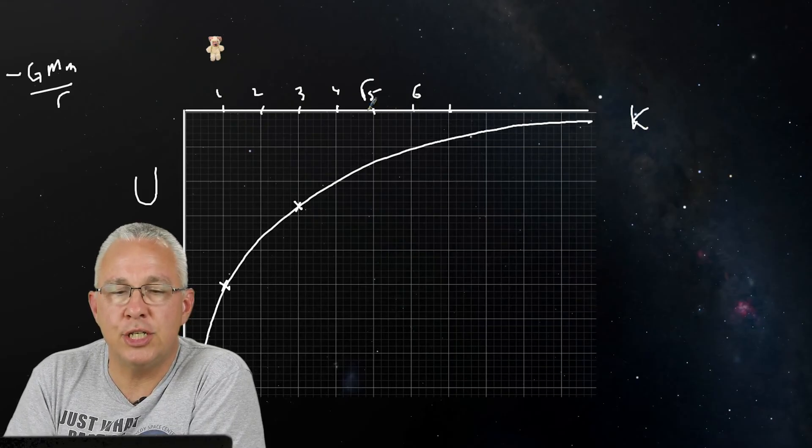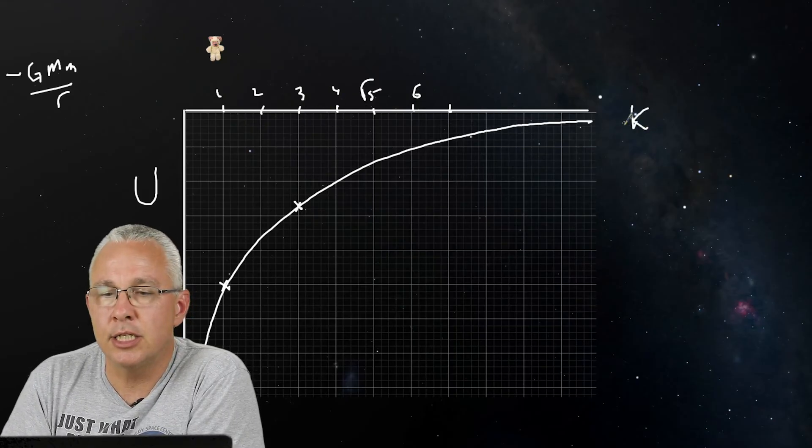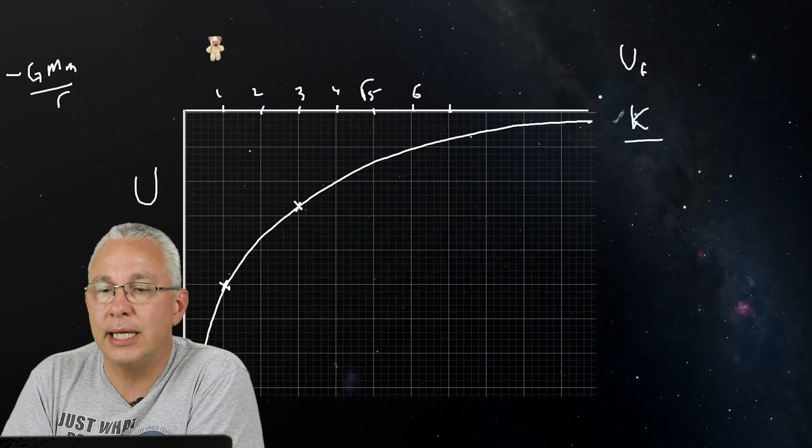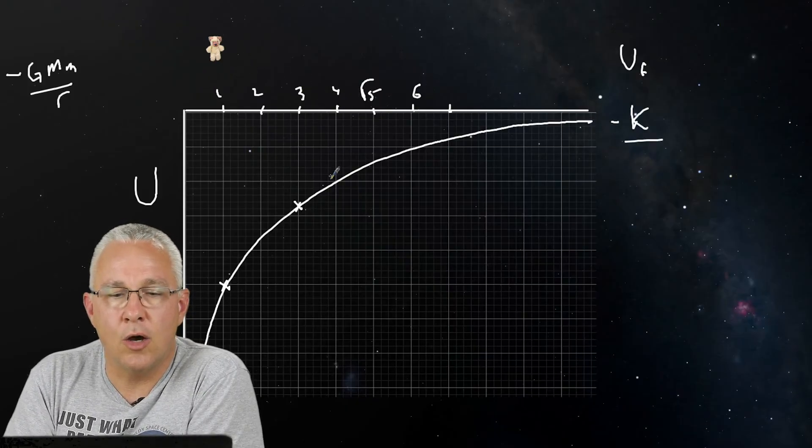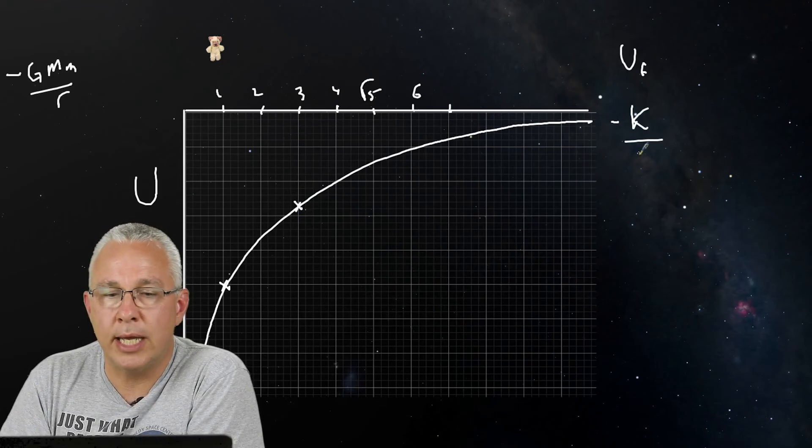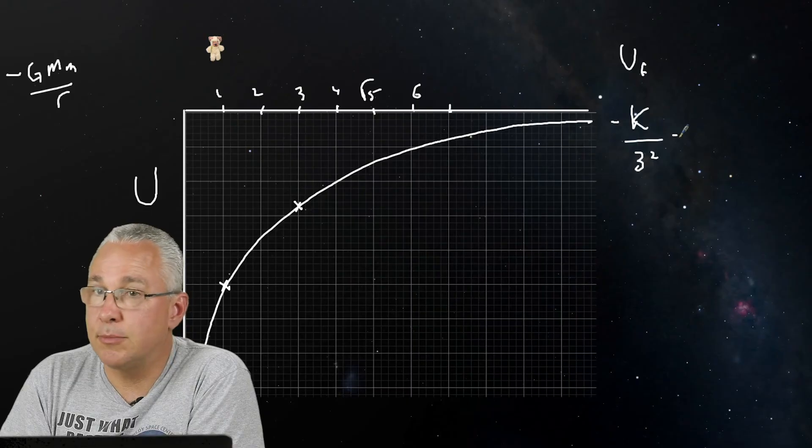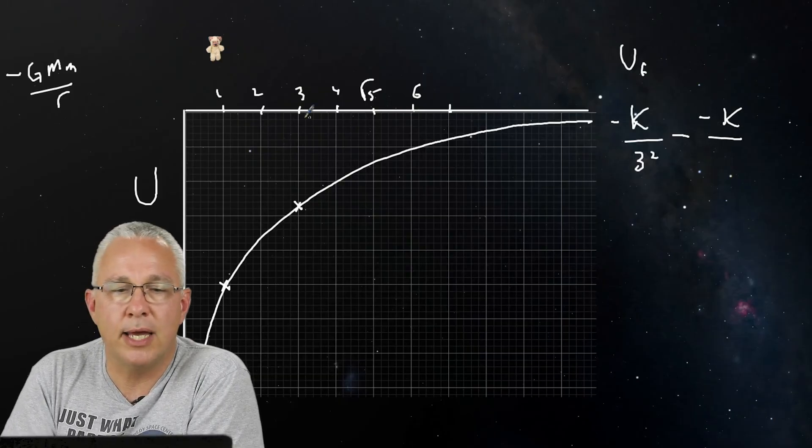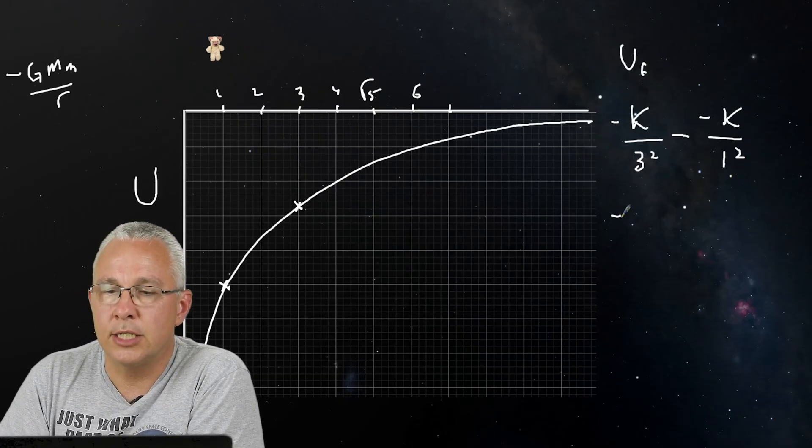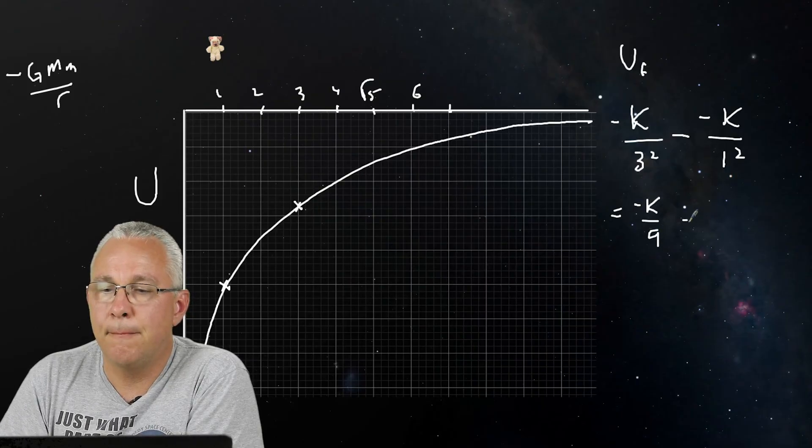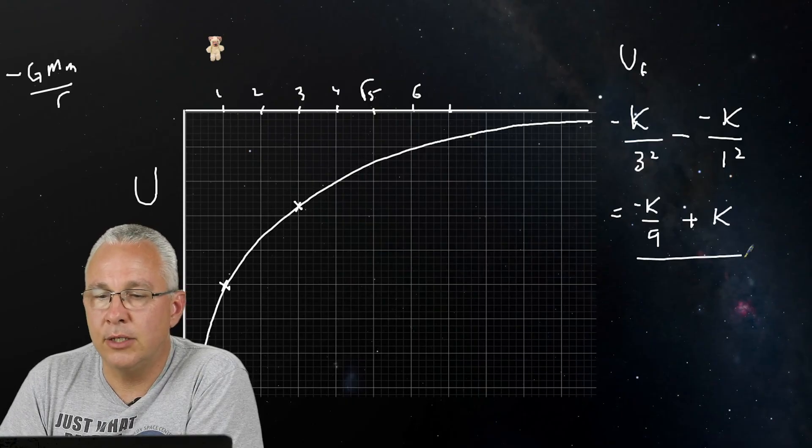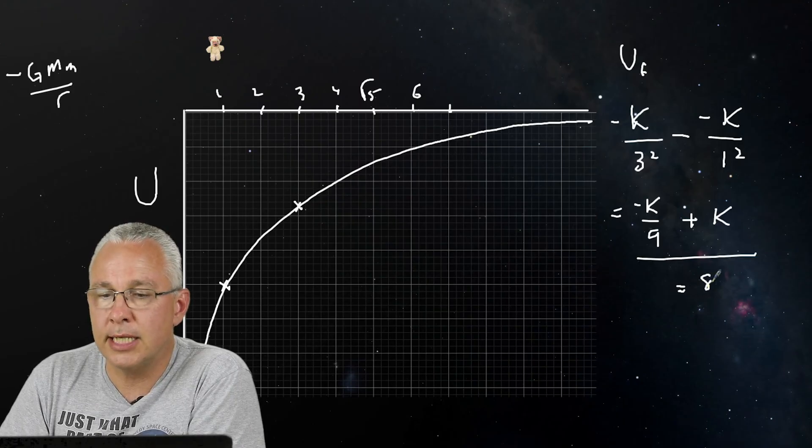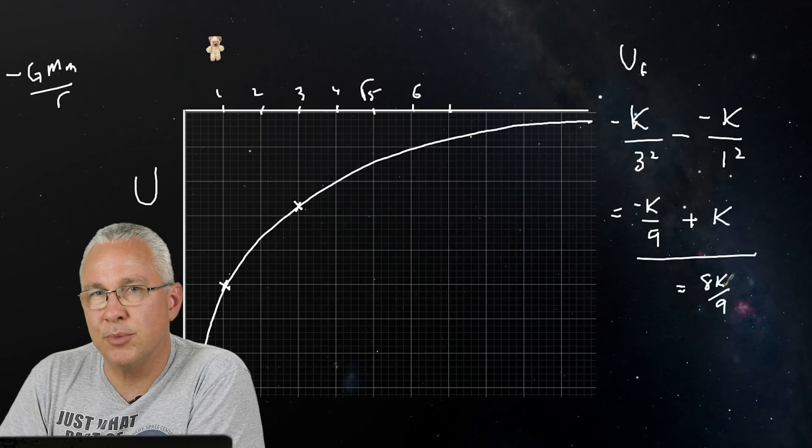So my gravitational energy final is in this position here. So this way, my U final is going to be K over equal to, now remember it's a negative value, K over, in this case, 3 squared. I subtract my initial, which is going to be negative K. That K, again, is just this number up here. But now what we have is over 1 squared. And so what I get is negative K over 9 plus K. Now, you can clearly see what I'm going to get here is I'm going to get a value of, in this case, 8K over 9. The number isn't important. What's important is the sign. It's positive. My gravitational energy has increased as I moved away.